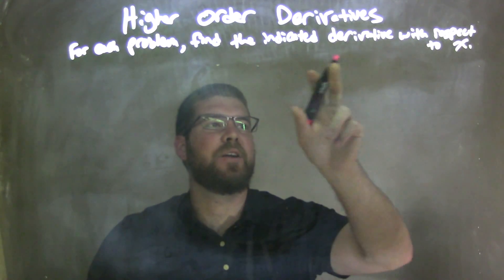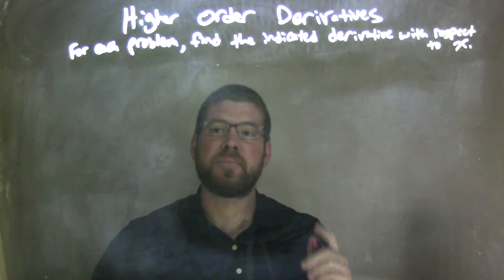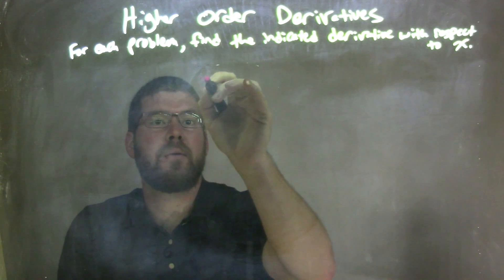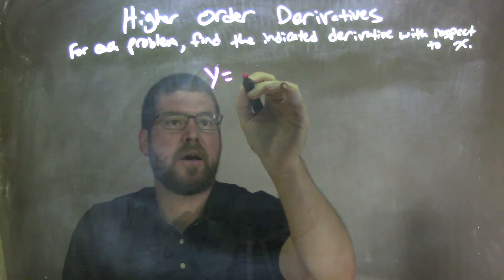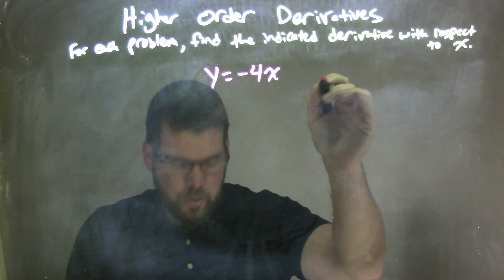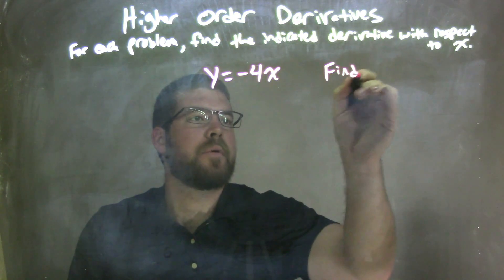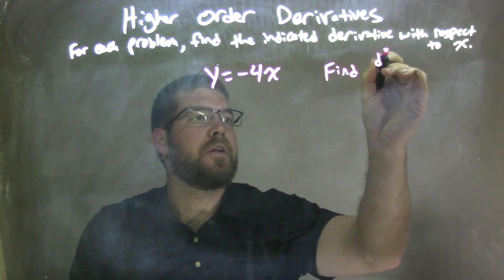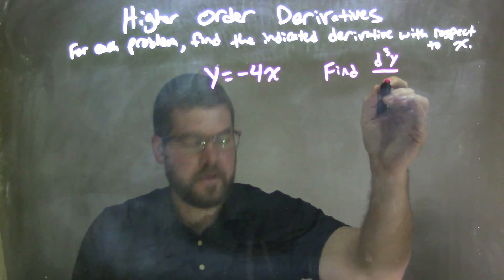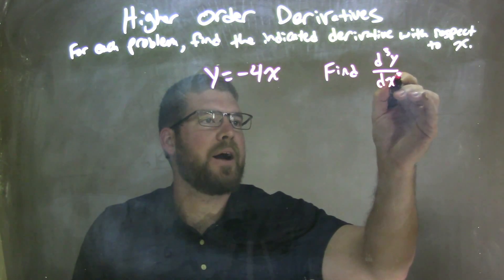For each problem, we're going to find the indicated derivative with respect to x. So if I was given this problem, y equals negative 4x, and we wanted to find d³y/dx³, the third derivative.